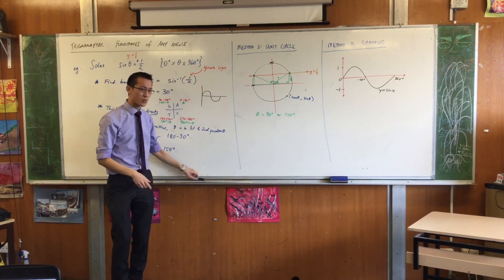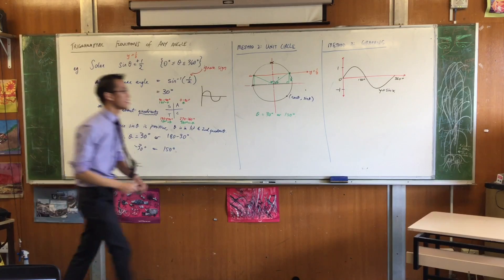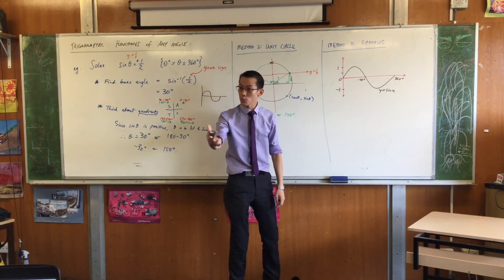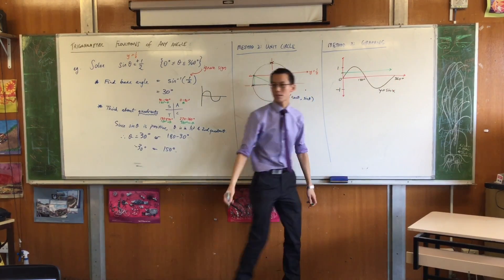So that means, where is y equals a half? Well, it's halfway up, isn't it? Here's a half, do you agree with that, roughly? So get your ruler out, and draw a line that goes all the way across, like that.